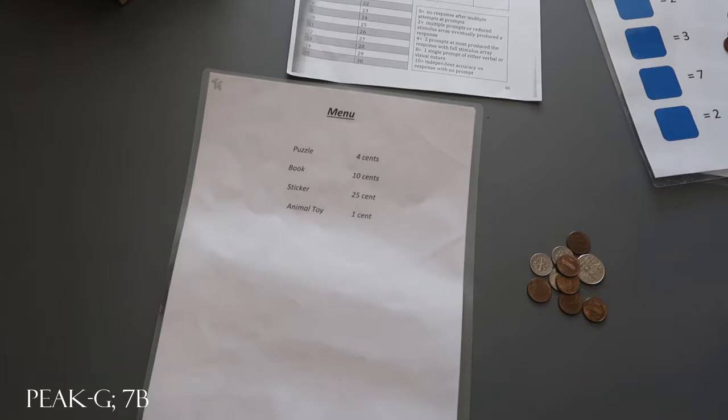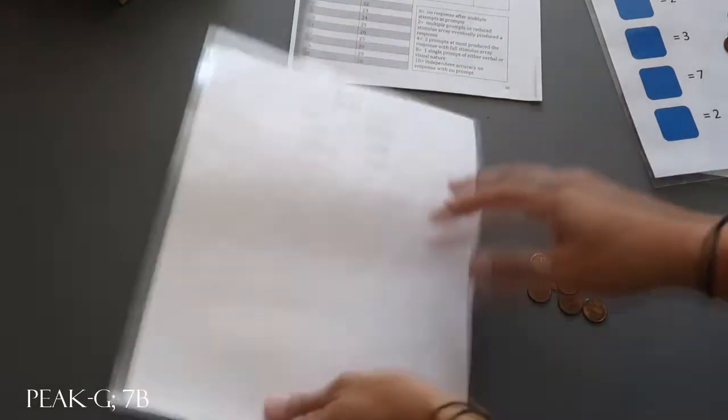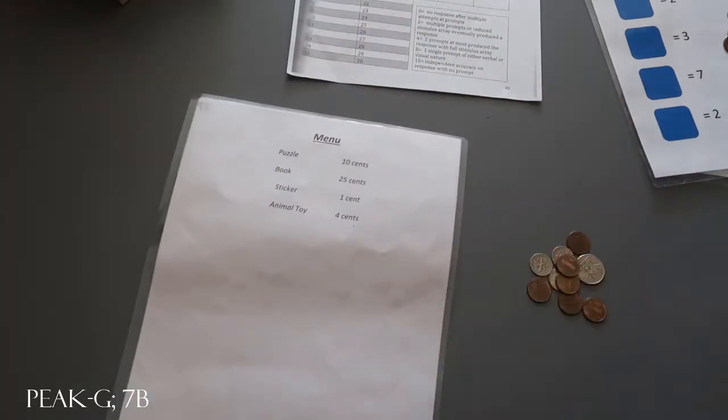And so those are all going to be intermixed with your train items. So puzzle is 10 cents, book is 25 cents, sticker is 1 cent, animal toy is 4 cents.